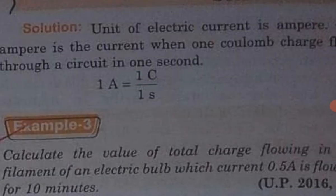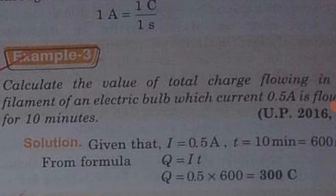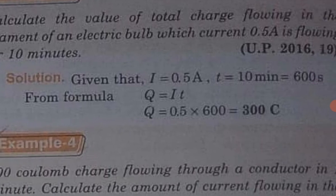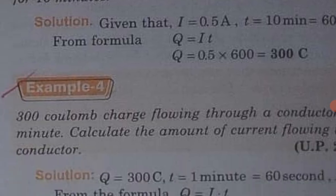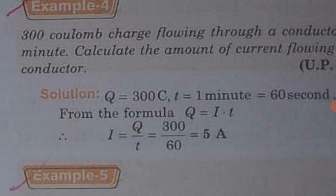Now a problem: Calculate the value of the total charge flowing into the filament of an electric bulb when a current of 0.5 ampere is flowing for 10 minutes. The formula to calculate the amount of current flowing in the conductor is Q is equal to I times T.